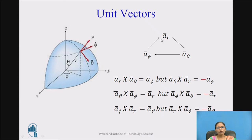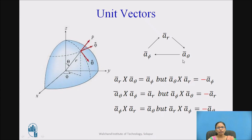For unit vectors, the dot product is easy: ār·ār = 1, āθ·āθ = 1, āφ·āφ = 1. To find the cross product, follow the cyclic triangle of the arrows: ār × āθ = āφ, but moving in the opposite direction, āθ × ār = −āφ. Similarly, āθ × āφ = ār and āφ × āθ = −ār. Also, āφ × ār = āθ and ār × āφ = −āθ. This is how I can find the cross product of the unit vectors.